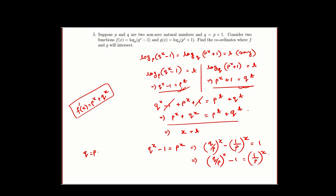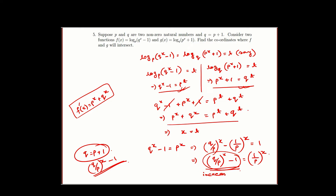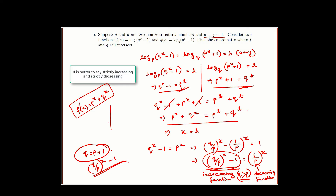We are given that q equal to p plus 1, so q is greater than p. The left-hand side (q/p)^(x−1) is an increasing function because q is greater than p. The right-hand side 1/p^x is a decreasing function. Since one side is an increasing function and the other side is a decreasing function, they will intersect at most at one point, so whatever the solution may be, it will be unique.